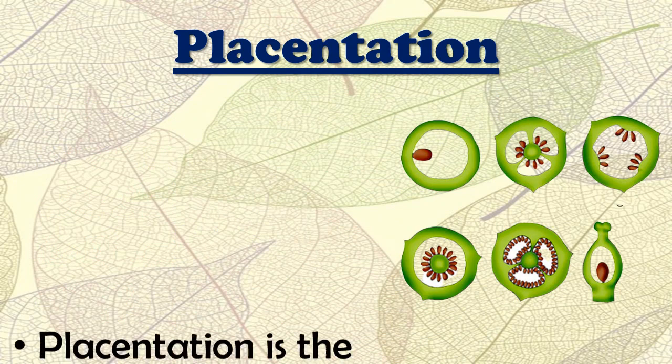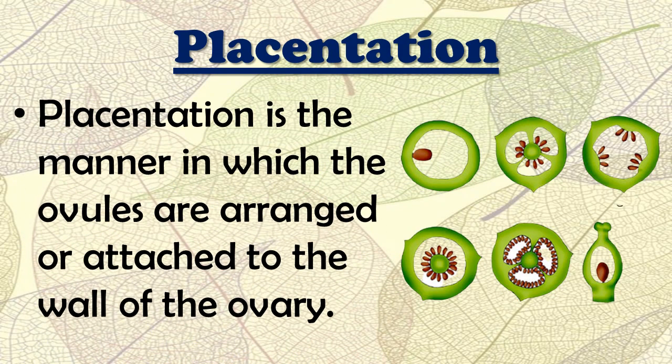Placentation is the manner in which the ovules are arranged or attached to the wall of the ovary. Just as inflorescence differs in different plants, placentation is also different for different types of plants. The ovules, after maturation, become the seeds of a fruit.